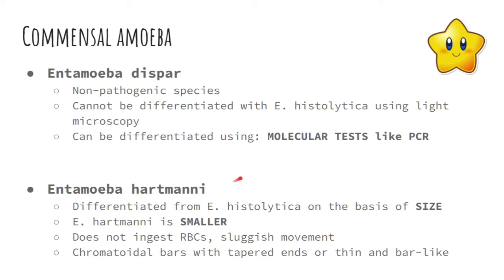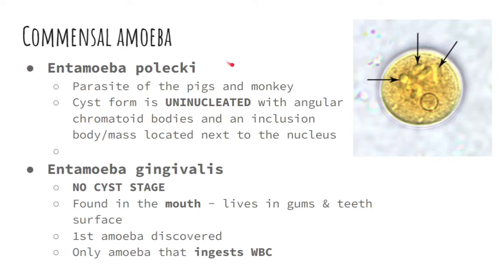Another commensal amoeba is Entamoeba polecki — a parasite of pigs and monkeys. The cyst form is uninucleated, meaning it has only one nucleus. It has angular chromatoid bodies and an inclusion body or mass located next to the nucleus, as seen in the illustration with the arrows pointing to the chromatoid bodies and inclusions beside the nucleus.